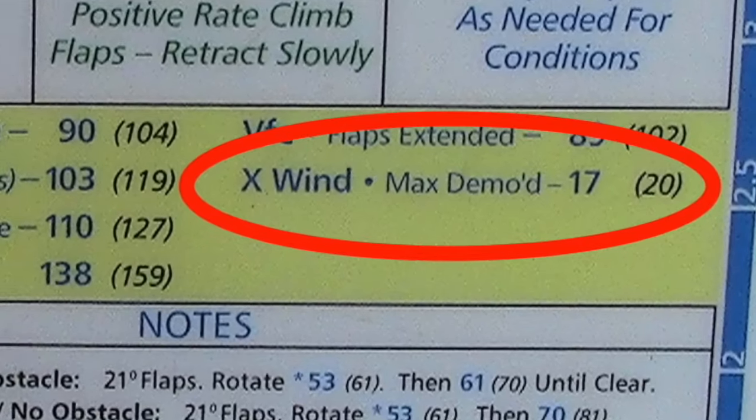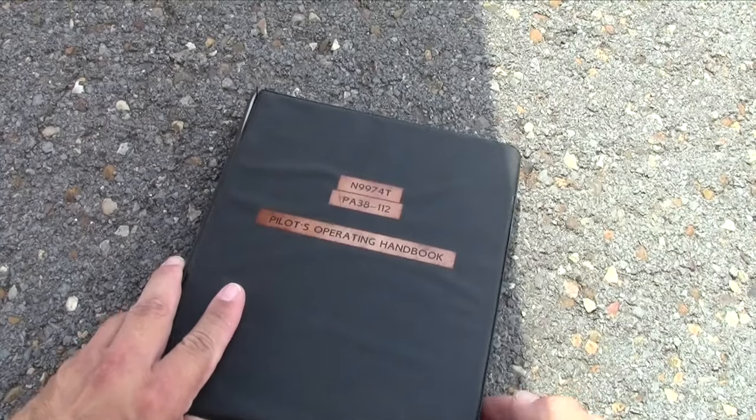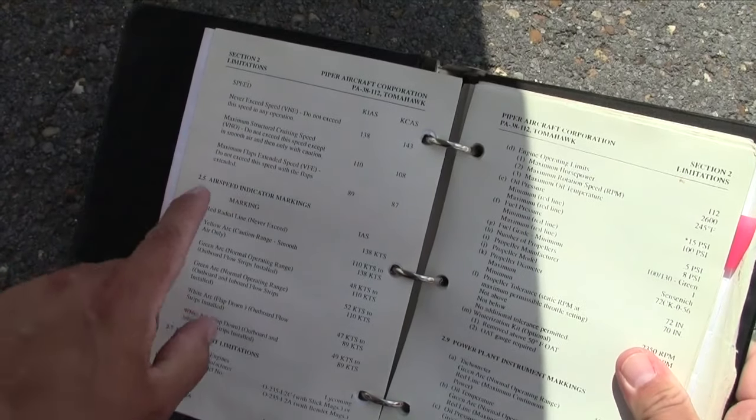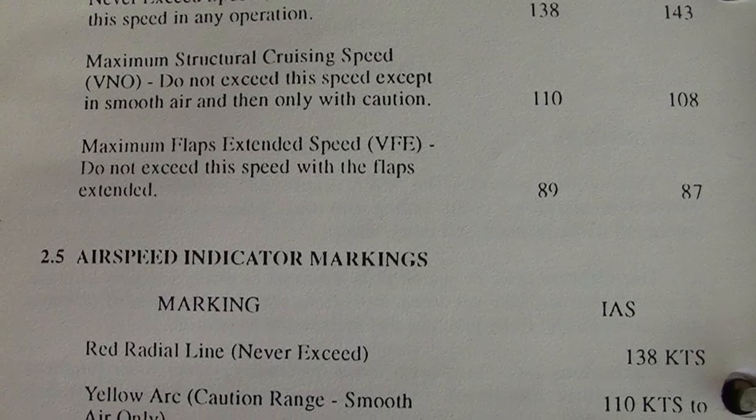Para determinar este crosswind component, puede ser calculado por el piloto utilizando la carta del Crosswind and Headwind Component Chart, la cual permite al piloto encontrar la velocidad del componente con viento cruzado para cualquier velocidad del viento y dirección del mismo. Esta carta la puedes encontrar en varios lugares, como lo es el manual del avión, en algunos checklists, o simplemente descargándola del Internet. Es imperativo que el piloto determine esta velocidad para cada avión en particular que él vuele, y evite así operaciones con condiciones de viento que puedan exceder la capacidad de la aeronave.